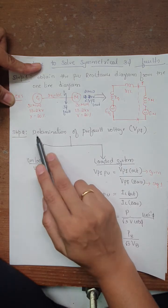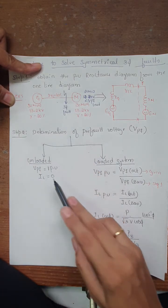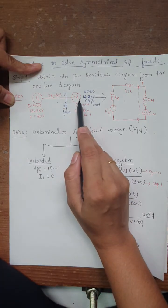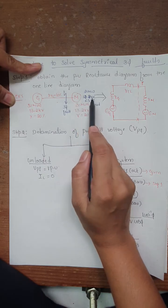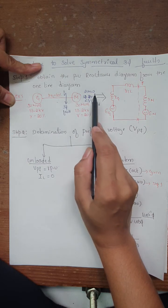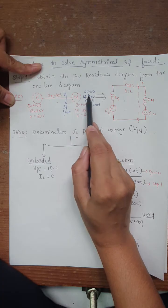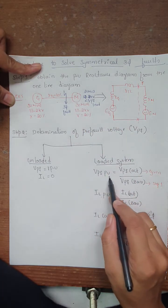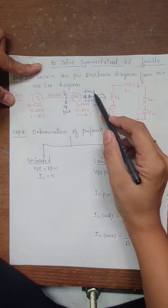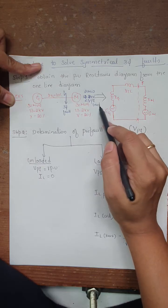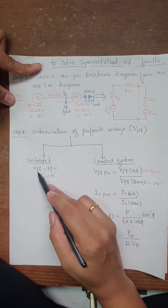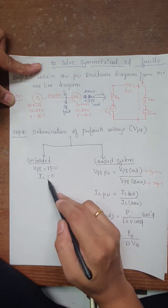Remember in Step 2, the key thing is to identify whether the system is loaded or unloaded based on the load side ratings. If loaded, calculate VPF and IL using the formulas. If the load side details are not given, the system is unloaded: VPF = 1 and load current IL = 0.